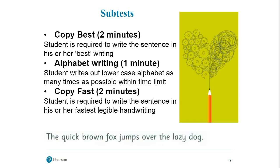The copy best task gives students two minutes to write 'the quick brown fox jumps over the lazy dog' in their best writing. The copy fast task uses the same sentence but students write in their fast writing — what they'd use just writing for themselves rather than trying to be neat. There's also a one-minute alphabet writing task: writing the lowercase alphabet as many times as they can in one minute, which is an automatic, over-learned task that shouldn't require much thought.